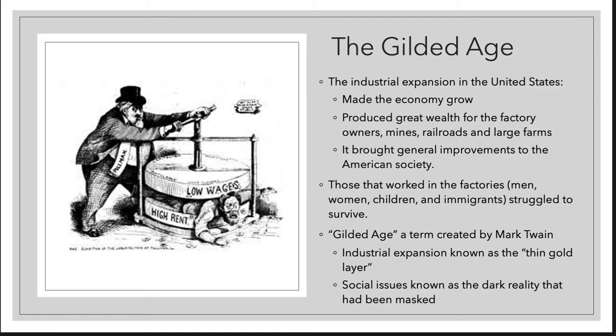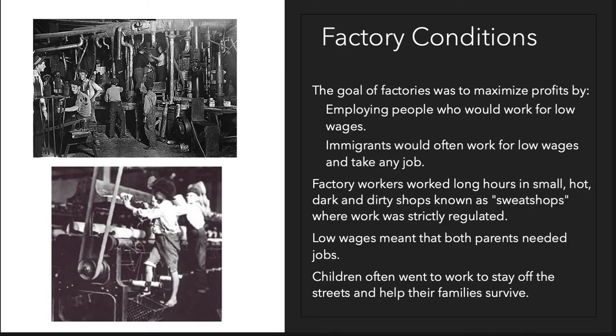What was the darkness — the terrible things that were happening? First, we have factory conditions. The goal of factories at this time was to maximize profits. In order to maximize profits, you have to cut costs somewhere else, and the place they were cutting costs was the people and the wages. They employed people who would work willingly for low wages — oftentimes immigrants, children, and women who would take any job no matter what the dangers might be.